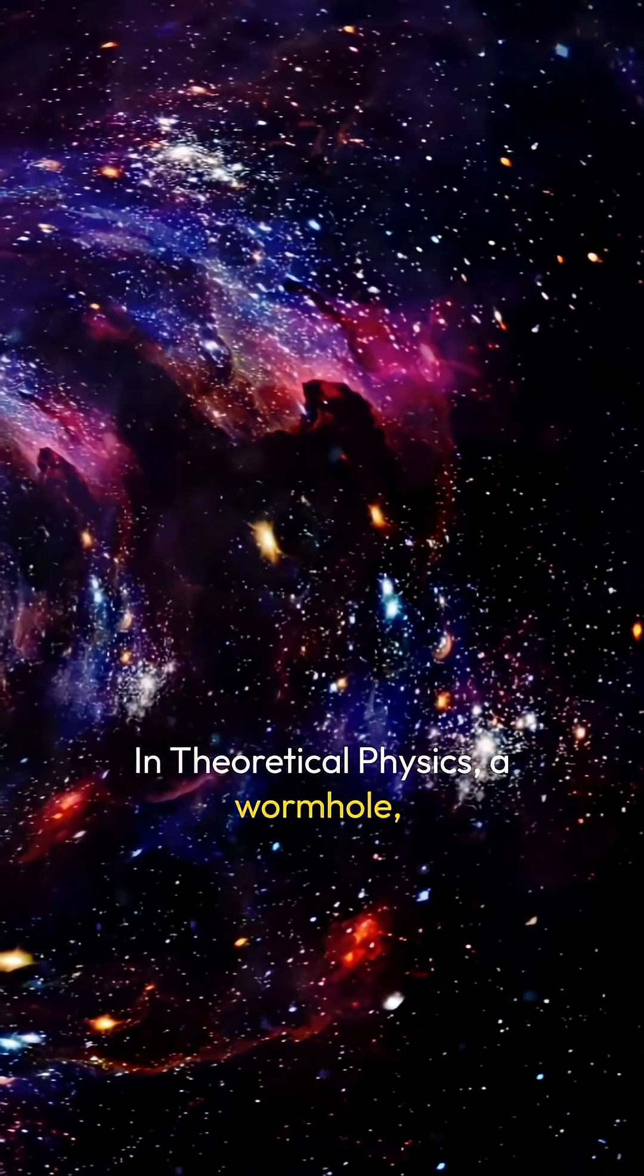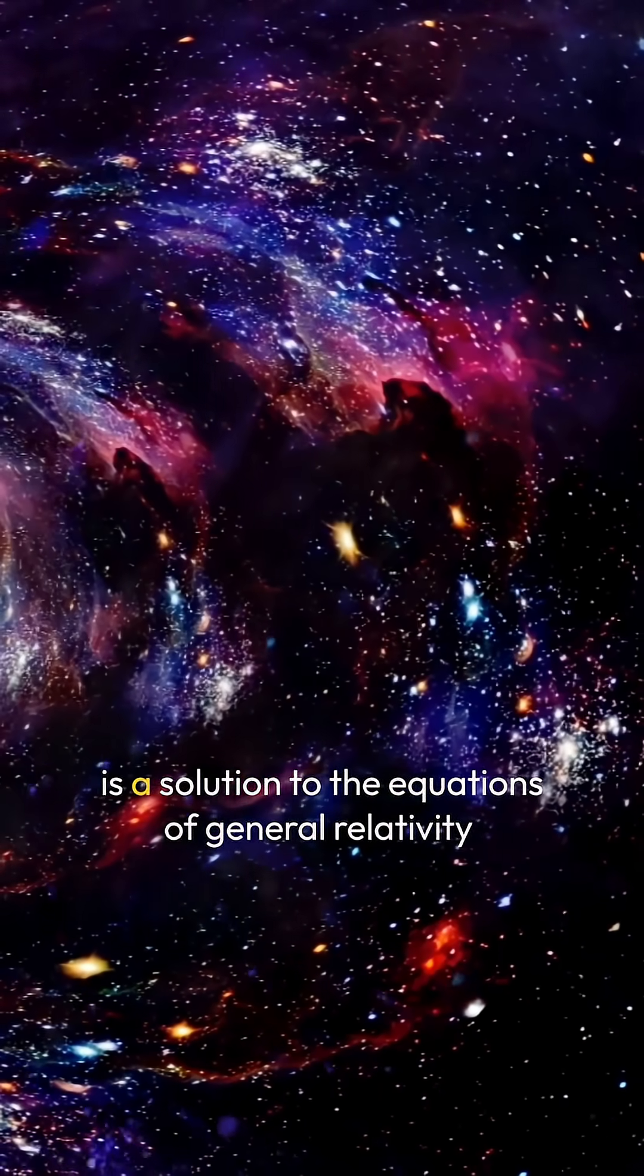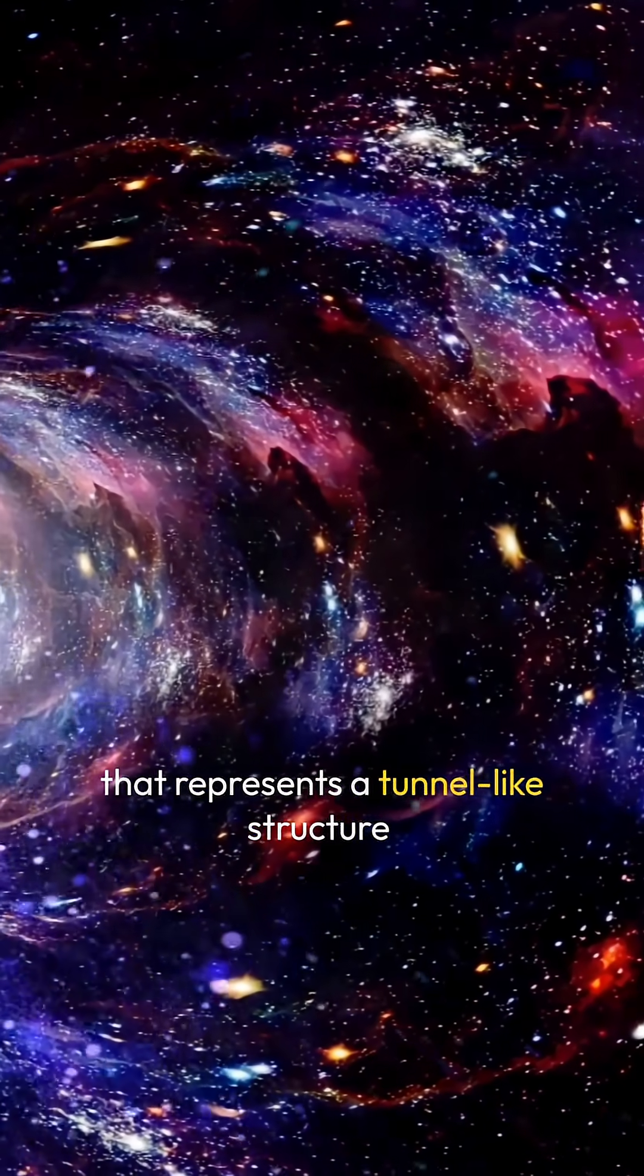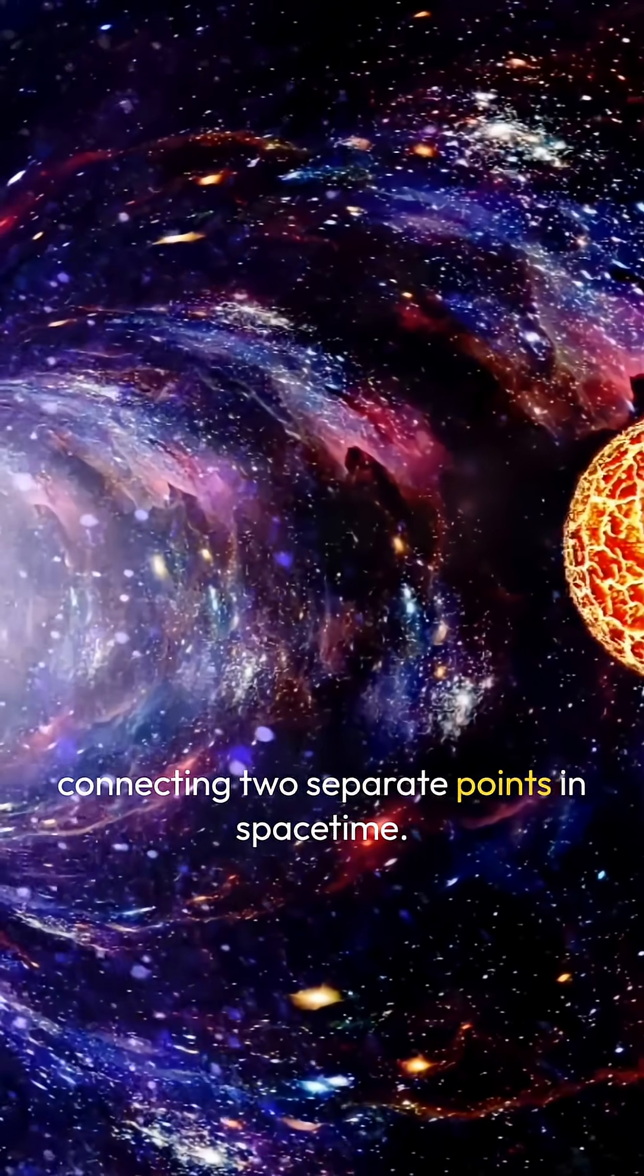In theoretical physics, a wormhole, or Einstein-Rosen bridge, is a solution to the equations of general relativity that represents a tunnel-like structure connecting two separate points in spacetime.